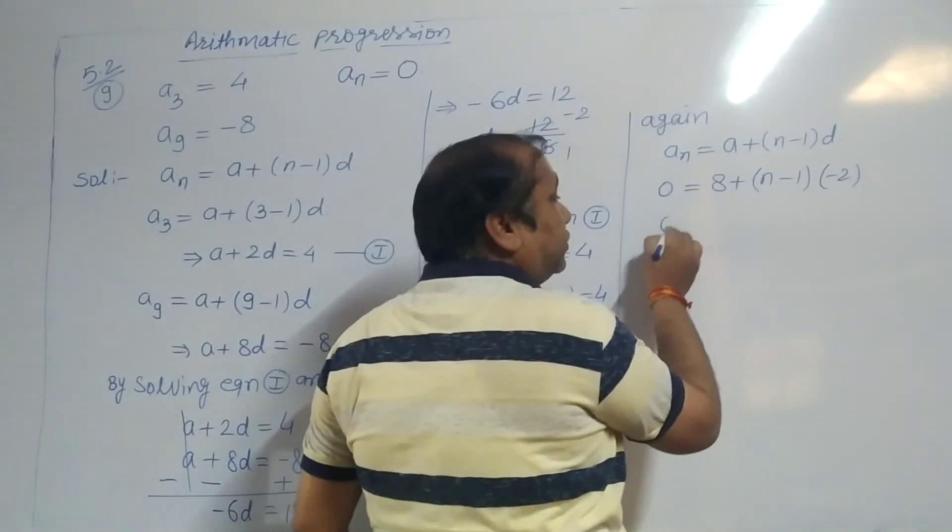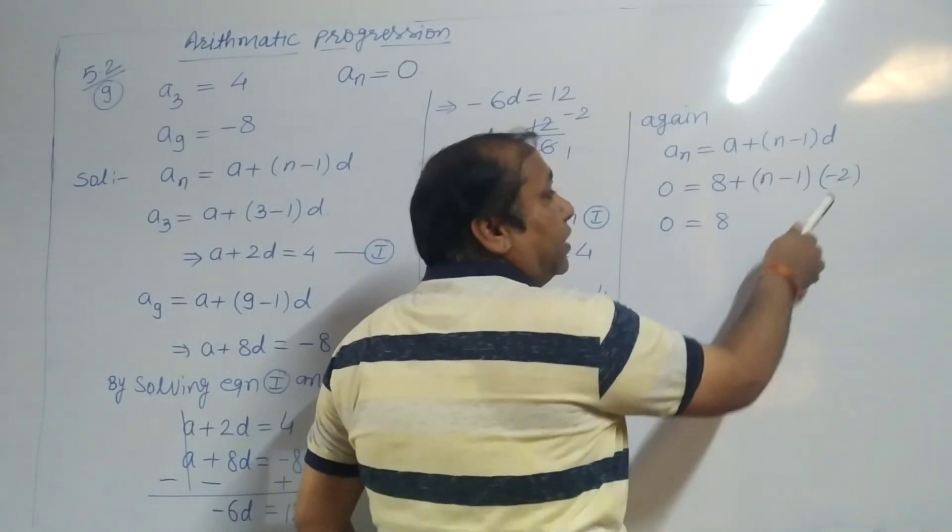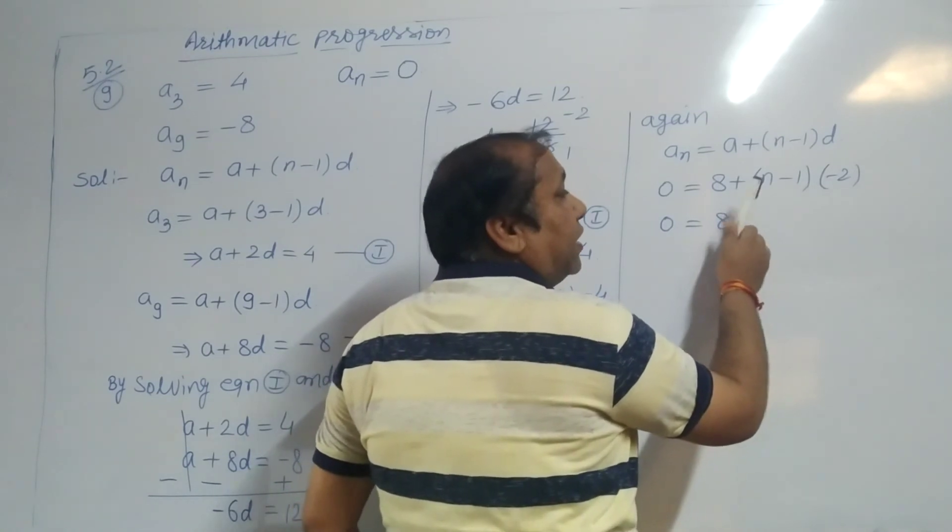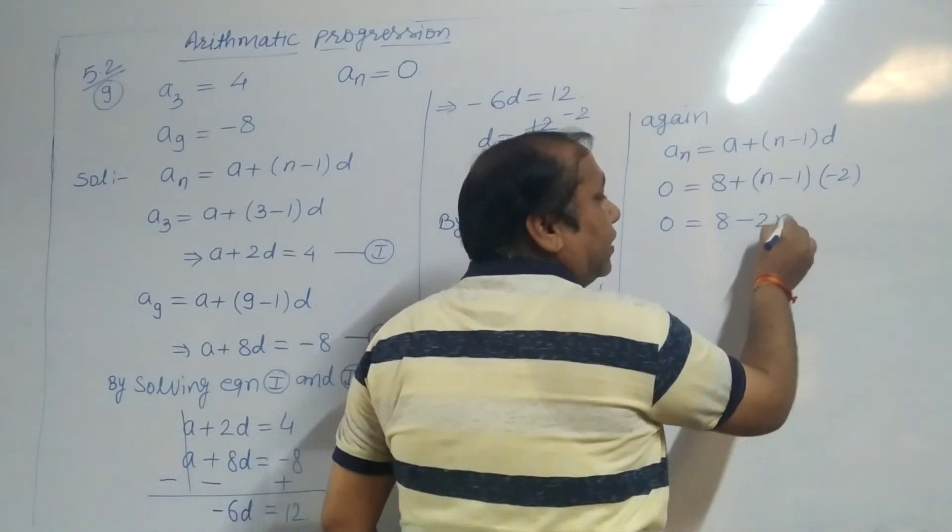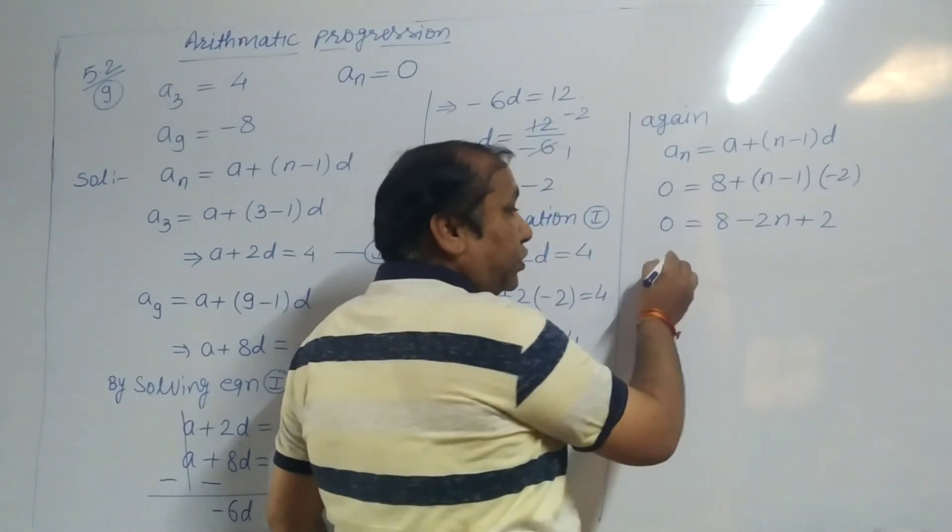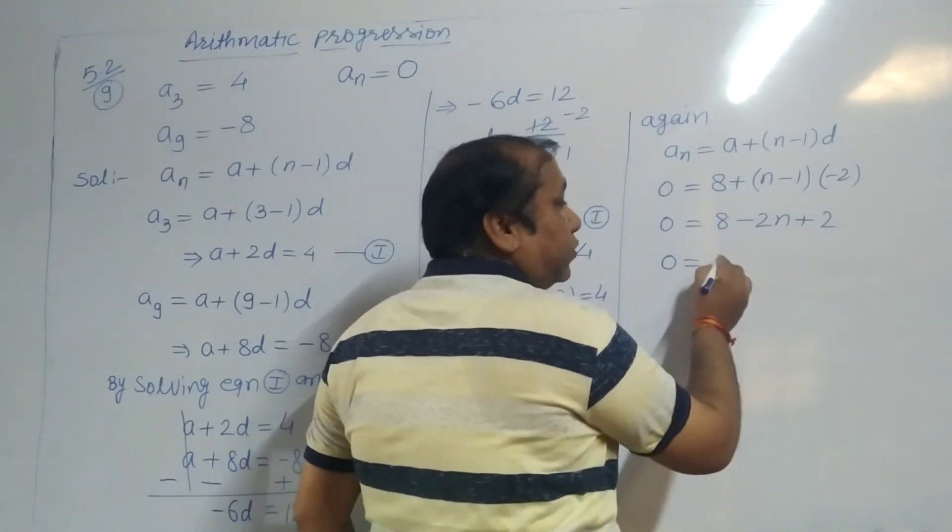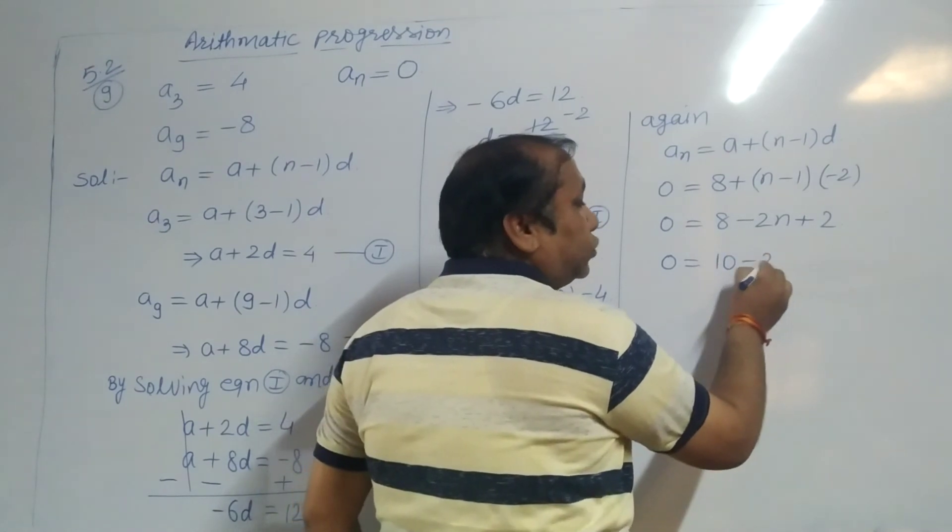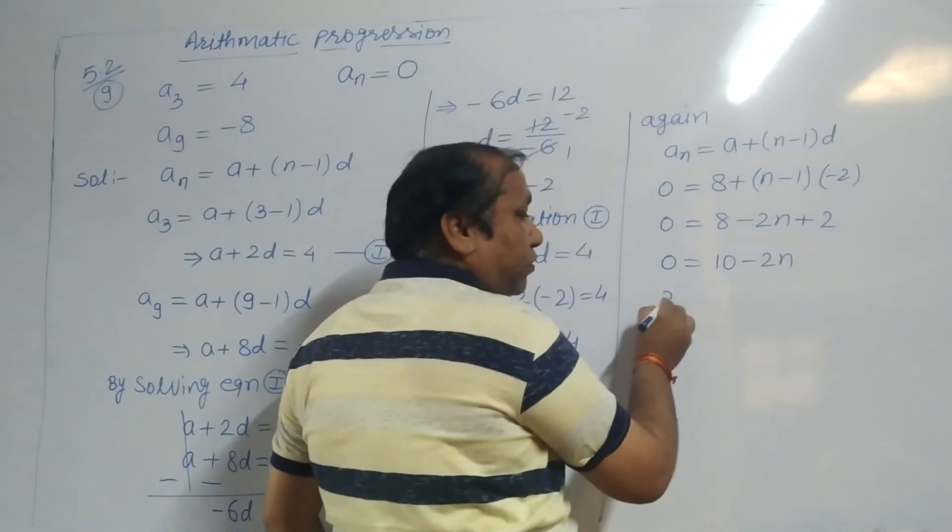Now solve this. 0 equals 8 minus 2 multiplied: minus 2N, and minus 1 times minus 2 is plus 2. 0 equals 8 plus 2, which is 10, minus 2N. Minus 2N goes to the other side. 2N equals 10.